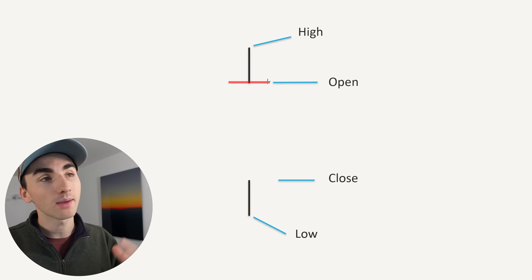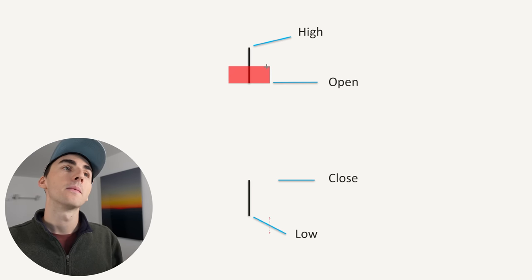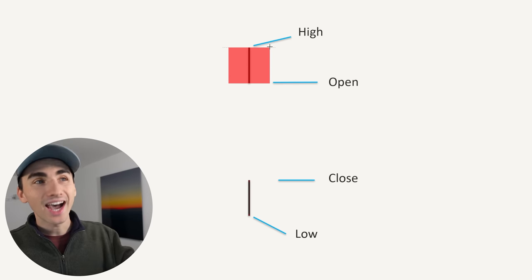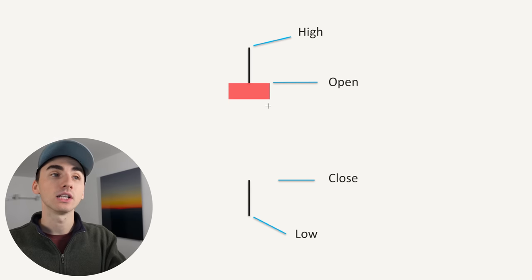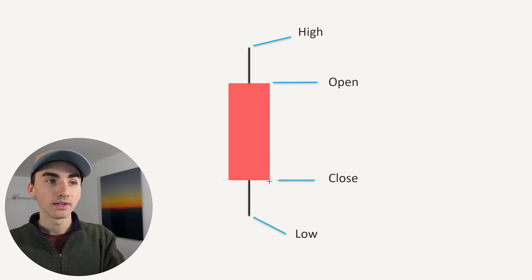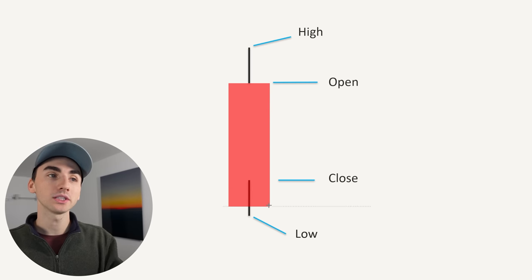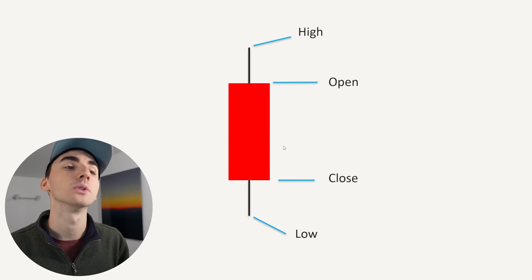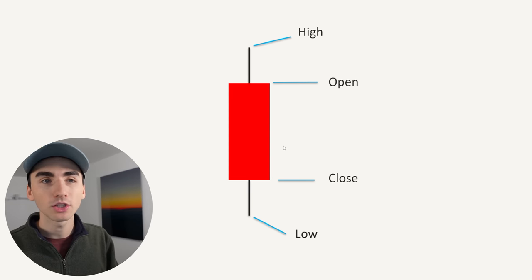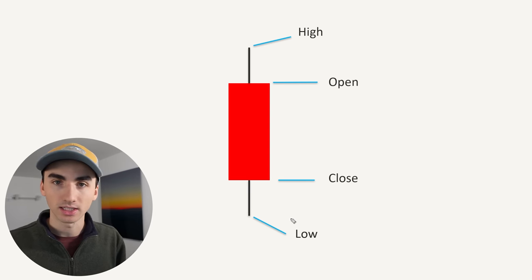How a bearish candlestick would look in real time: it would open up here, punch up to the high, and then start selling off. It would actually retrace a little bit and then end up closing at the close. And so that's how you read a candlestick.